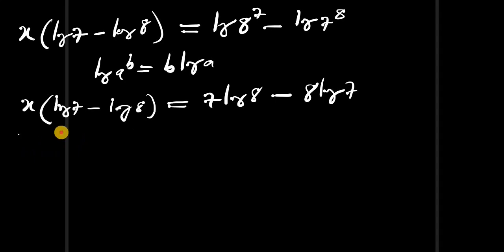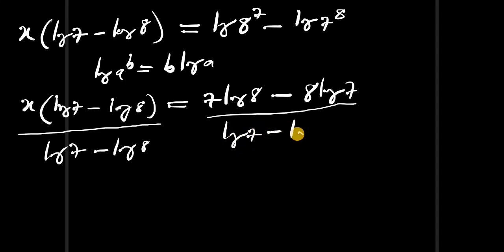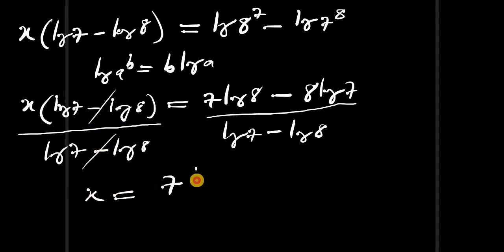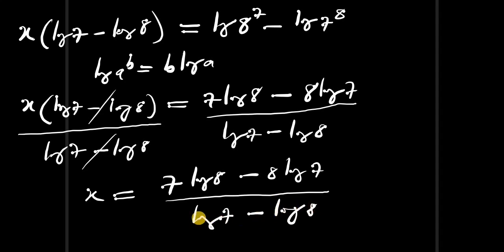We can divide both sides by log of 7 minus log of 8. This will cancel, and we have x is equal to 7 log of 8 minus 8 log of 7, divided by log of 7 minus log of 8.